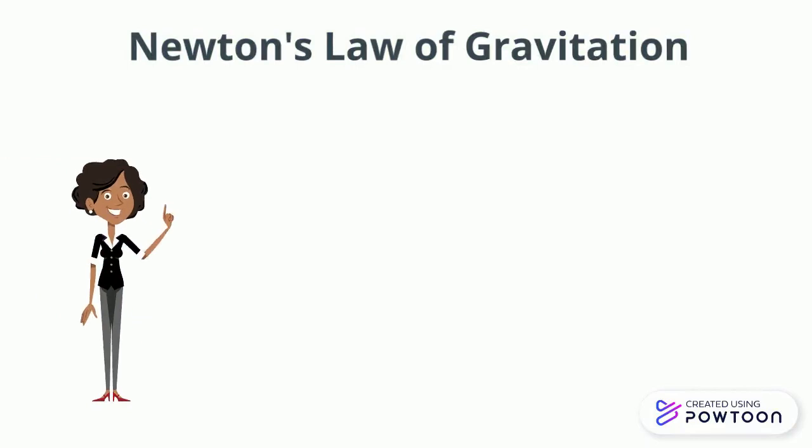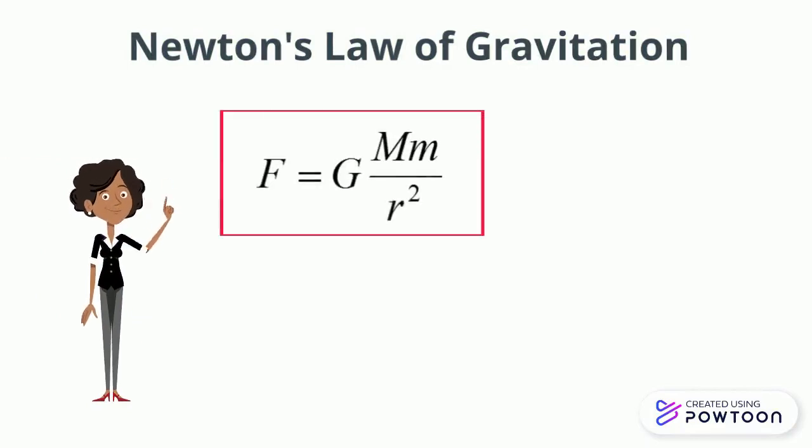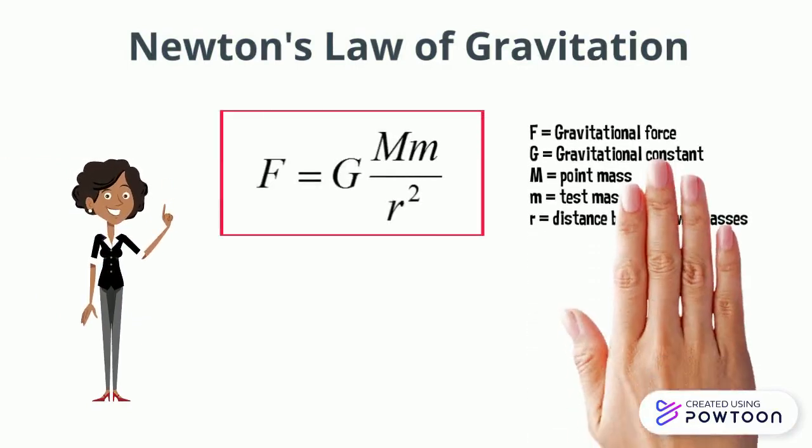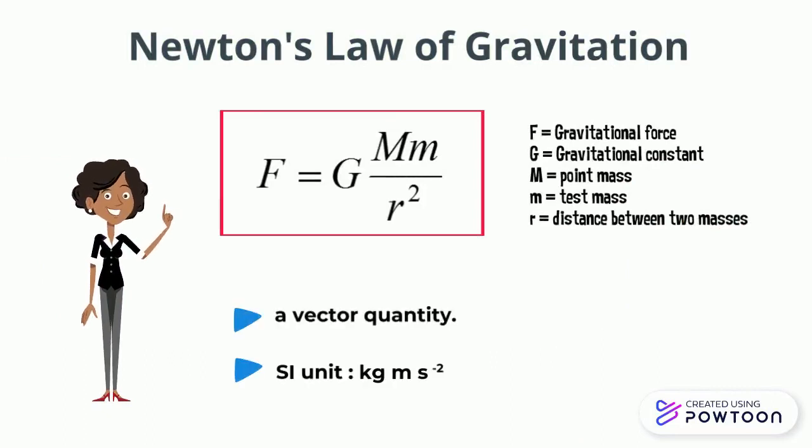Or, mathematically, F equal to Gmm over R squared. It is a vector quantity and the unit is kilogram meter per second per second.